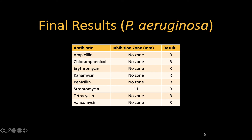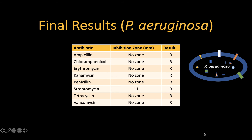In general, gram-negative bacteria are more resistant to antibiotics than gram-positive bacteria. Pseudomonas aeruginosa in particular has many proteins in their membranes with which they pump antibiotics out of the cell, making them resistant.